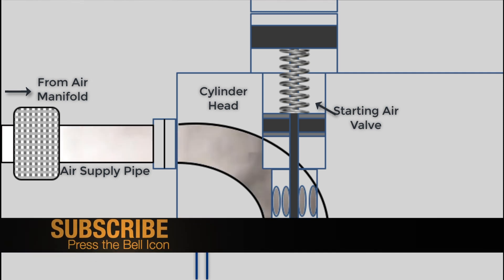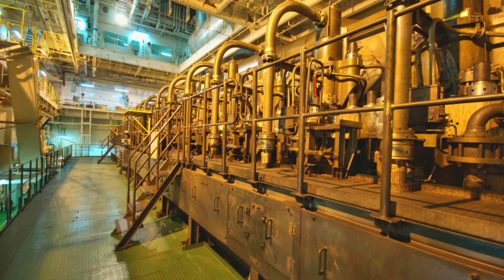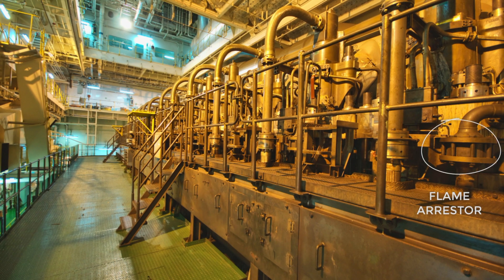To protect the air manifold from hot gases and backfiring from the cylinder, a flame arrester is fitted in the air supply pipe near the cylinder head.